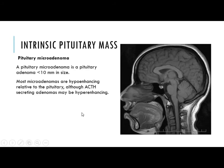Now, starting with intrinsic pituitary mass, we will discuss pituitary pathology beginning with pituitary microadenoma. Pituitary microadenoma is an adenoma less than 10 mm in size. Most microadenomas are hypo-enhancing relative to the pituitary, although ACTH-secreting adenomas may be hyper-enhancing. The hypo-enhancing area represents the microadenoma, and the posterior lobe bright spot is the normal appearance of the posterior pituitary.